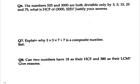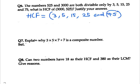As we know that the numbers 525 and 3000 are both divisible by 3, 5, 15, 25 and 75, the highest common factors will be 3, 5, 15, 25 and 75. So HCF of these numbers will be the highest number out of these all, so it is 75. The HCF of 3000 and 525 will be 75.